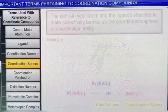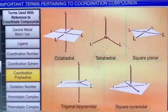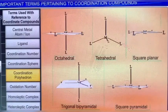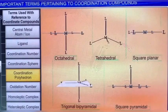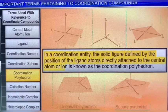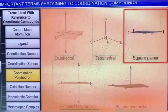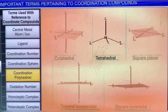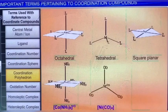Coordination polyhedron is another term used in coordination chemistry. In a coordination entity, the ligands are attached to the central metal ion in such a way that it gives a definite geometry to the complex. The solid figure defined by the position of the ligand atoms directly attached to the central atom or ion is known as the coordination polyhedron. The most common coordination polyhedra are octahedral, square planar, and tetrahedral. For example, [Co(NH₃)₆]³⁺ is octahedral, [Ni(CO)₄] is tetrahedral, and [Pt(Cl)₄]²⁻ is square planar.